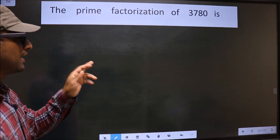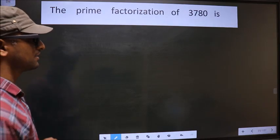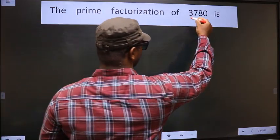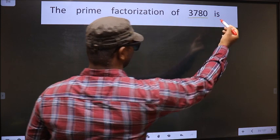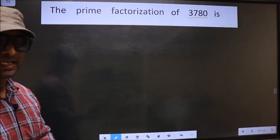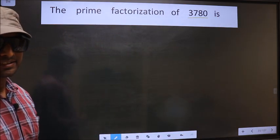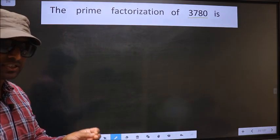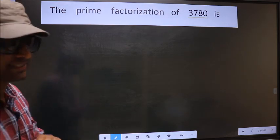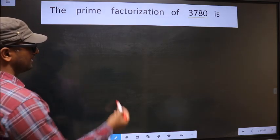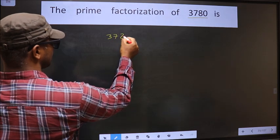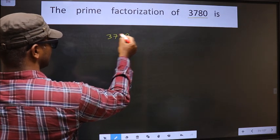The prime factorization of 3780 is — to do the prime factorization, first we should frame it in this way. That is 3780.